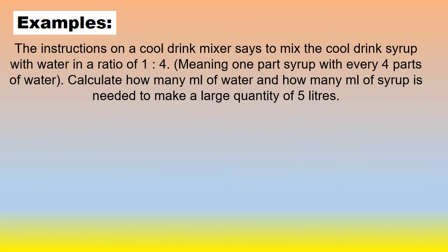Let's have a look at another example. The instructions on a cool drink mixer says to mix the cool drink syrup with water in a ratio 1 to 4. Meaning one part syrup with every four parts of water. Calculate how many milliliters of water and how many milliliters of syrup is needed to make a large quantity of 5 liters. So you want to make 5 liters of cool drink, and they ask you how many milliliters of each do you need? If you think of 5 liters, how many milliliters in a liter? A thousand. So 5,000 milliliters. That is what you want to make.